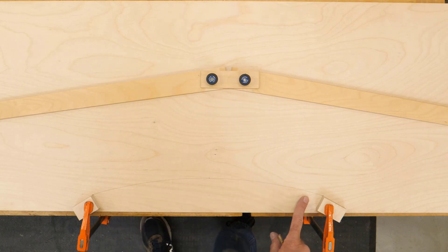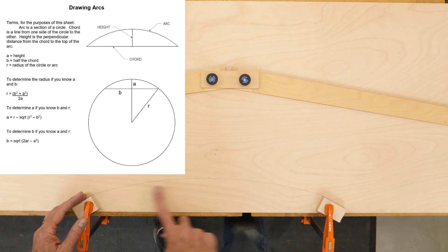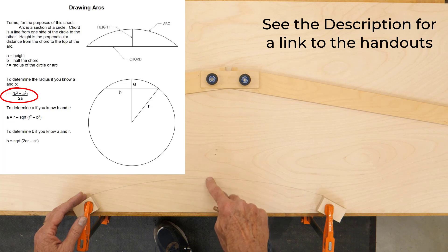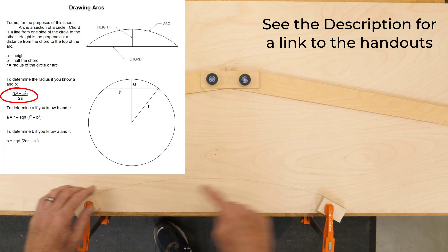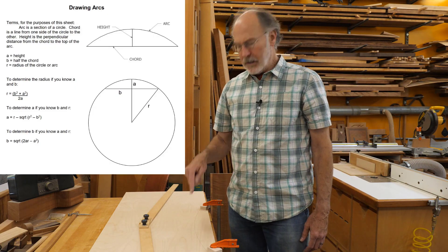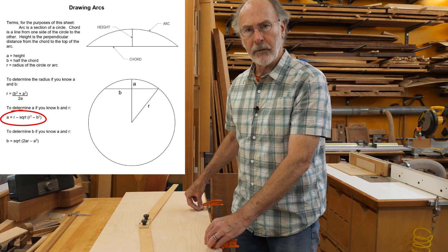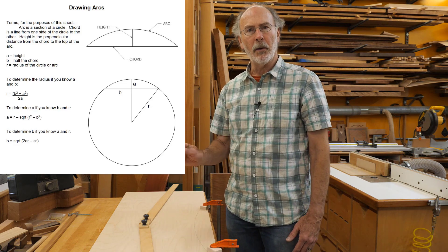That is a true radius. Now using the handout that I have, I can determine what that radius is. I just need to know the height of the arc and the distance of the chord. I can also back into the height if I know the radius and the chord, so I can use a formula to go both directions.